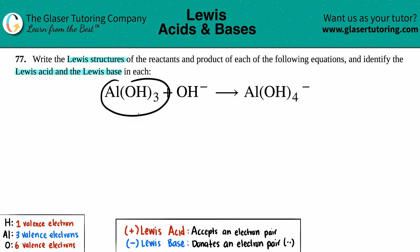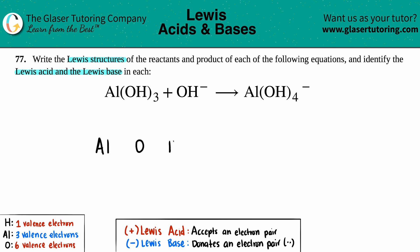So for Al(OH)₃, it seems like we have aluminum bound three times to an oxygen and then a hydrogen. So let's write that out: aluminum in the center, with an O and an H on one side, another O and H on the other side, and an O and H on the bottom. That's the structure. If we wanted to write out all the bonds — aluminum has three valence electrons.